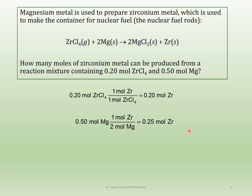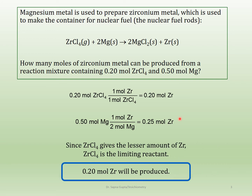Looking at these two numbers, 0.2 moles is smaller than 0.25, which means zirconium chloride is our limiting reagent because it gives the smaller quantity of zirconium, whereas magnesium is our excess reagent. So the answer is 0.2 moles of zirconium metal produced. Zirconium chloride is the limiting reagent. Since the question asks for moles, you can leave the answer in moles.